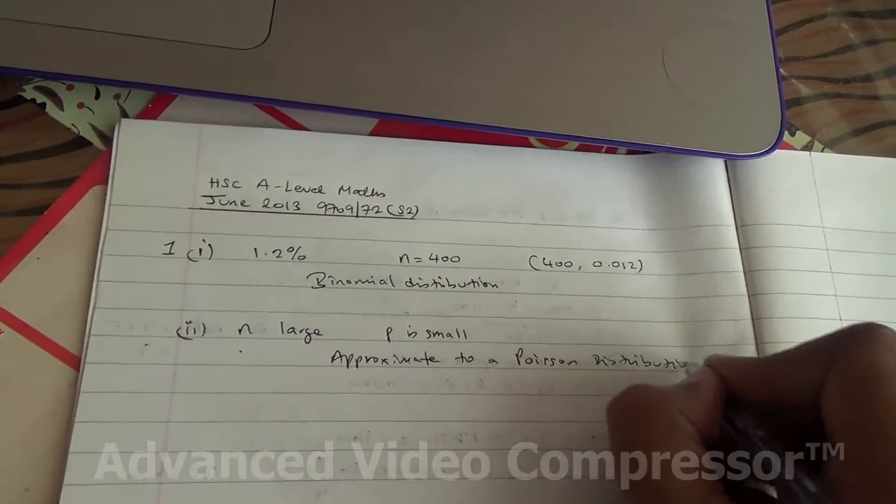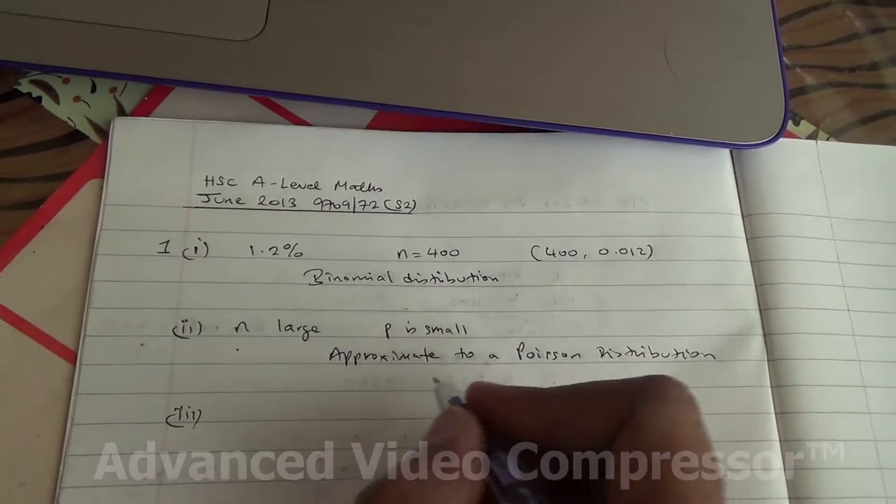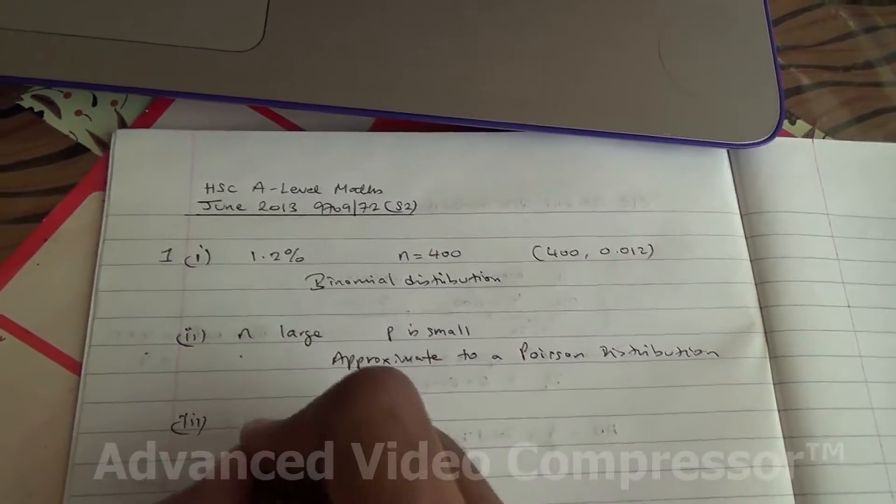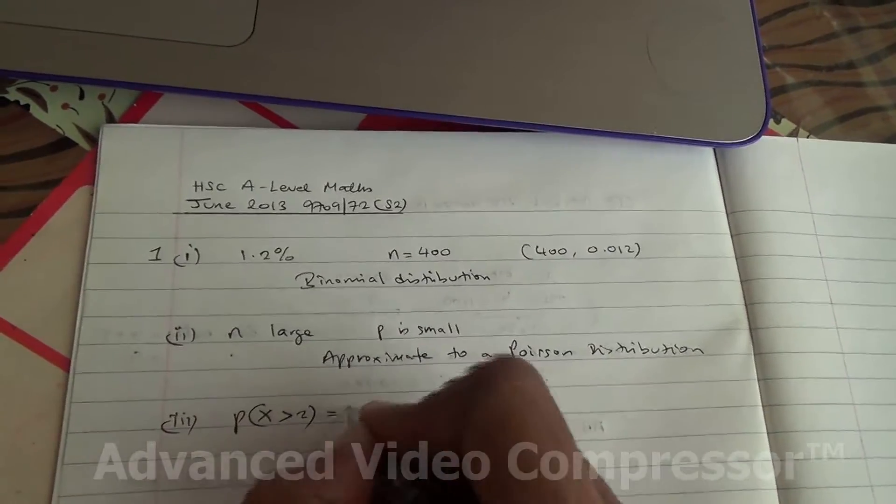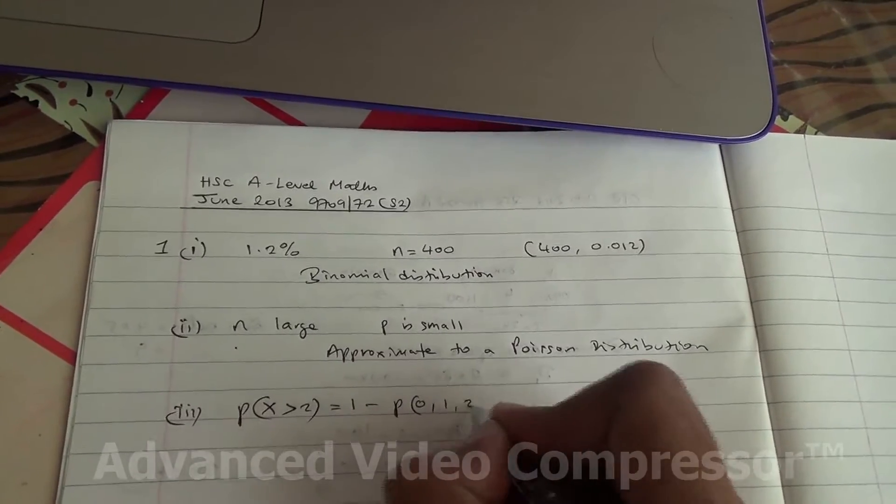Here is the answer for the second part. For the third part, we need to find the probability that the sample will include more than two bent rods. P of x being greater than 2, which is exactly the same as 1 minus p of x is equal to 0, 1 and 2.